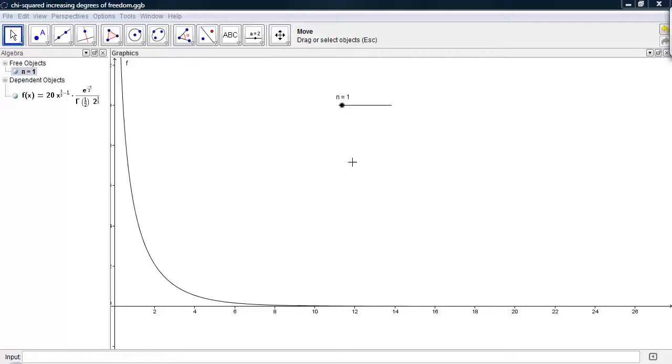The purpose of this demonstration is to show how increasing the degrees of freedom for a chi-square distribution affects the overall shape of the curve.